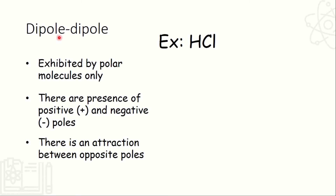Dipole-dipole. Pag sinabi namang dipole-dipole, so exhibited by polar molecules only. So polar molecules yun — kapag non-polar molecules, automatic London dispersion na siya. So polar molecule lang: there are presence of positive and negative poles, so therefore there will be attraction between the opposite poles. Example is HCL, hydrogen chloride.